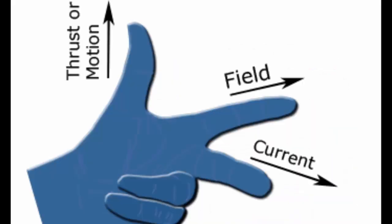Fleming's left hand rule states that if your middle finger points in the direction of the current and the index finger in the direction of the field, then the motion will always happen in the direction of the thumb. That was the motor principle. When a current carrying conductor is placed in a magnetic field, the current direction is given by the middle finger, the field from north to south pole by the index finger, and the force on each conductor is exerted in the top direction.